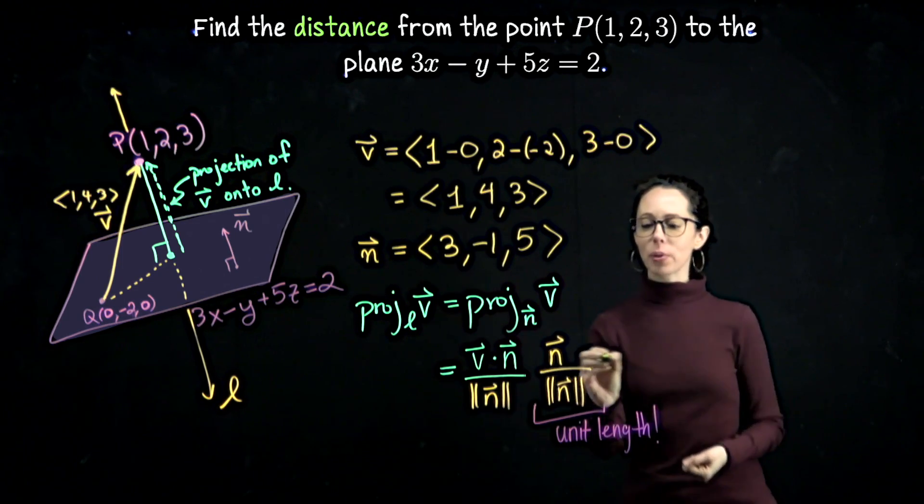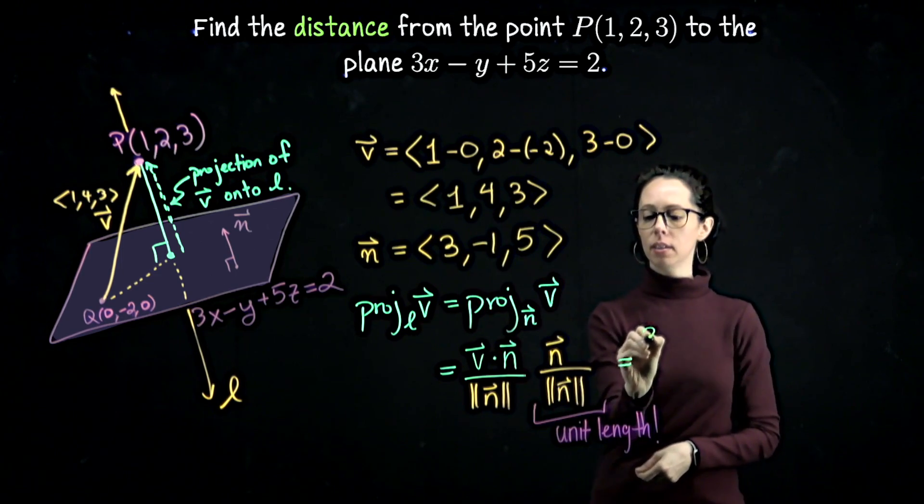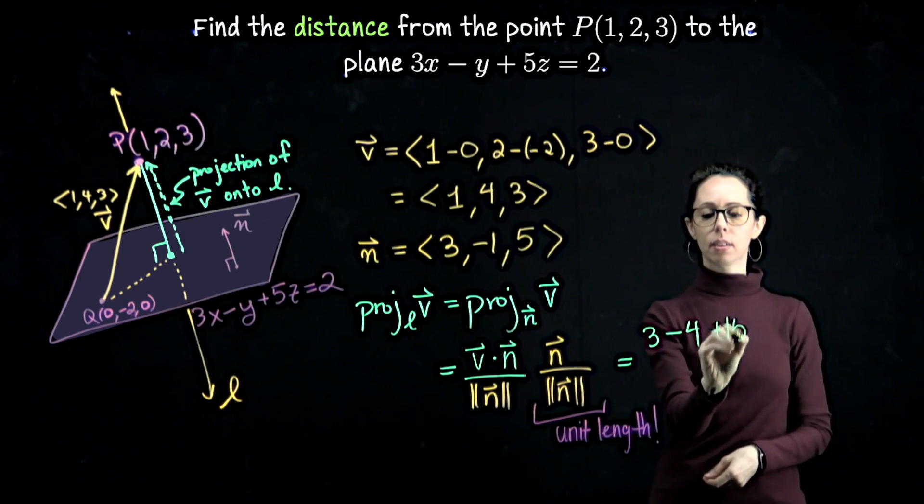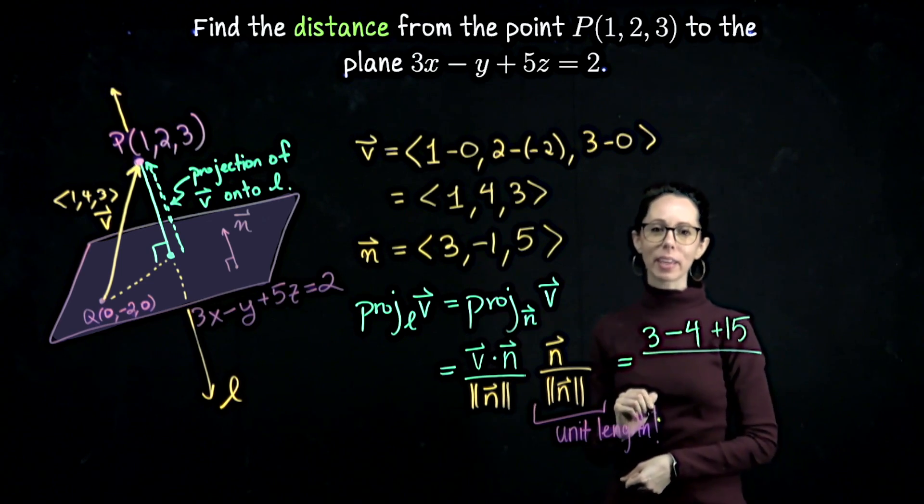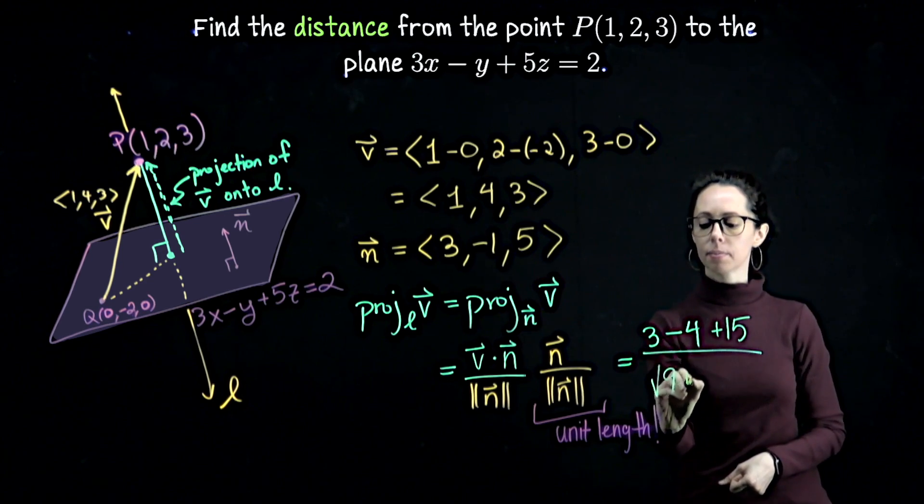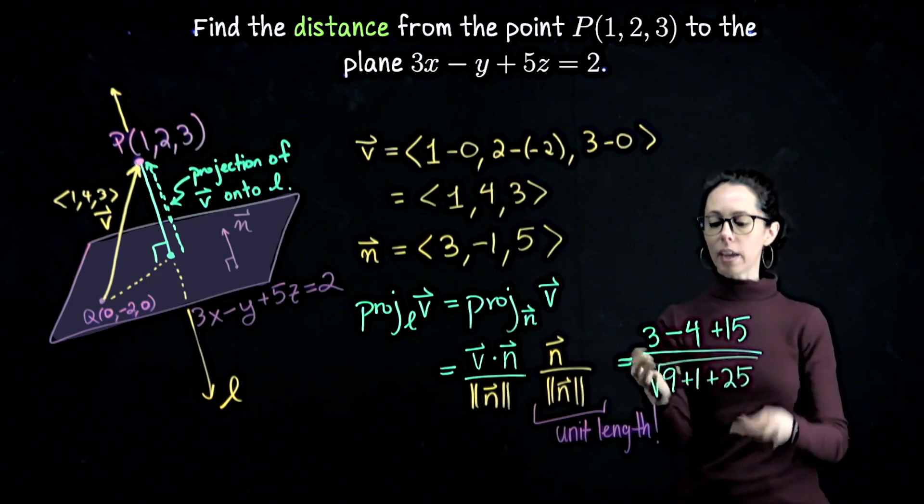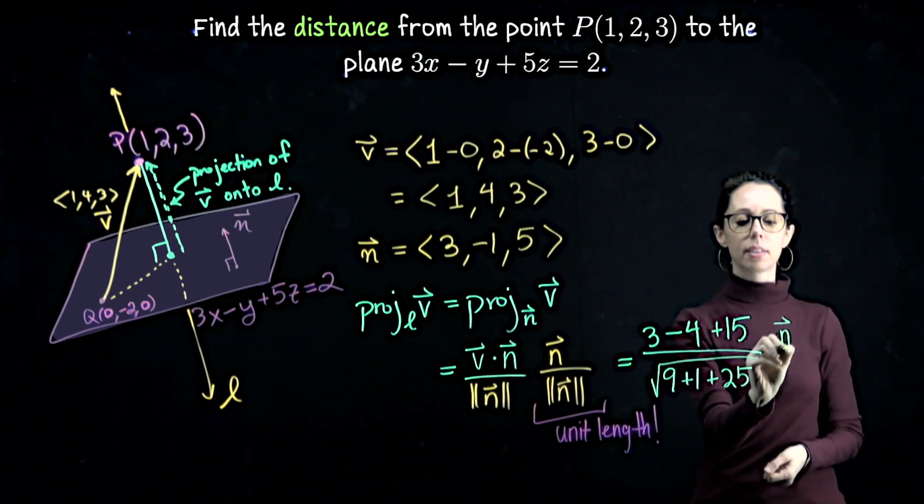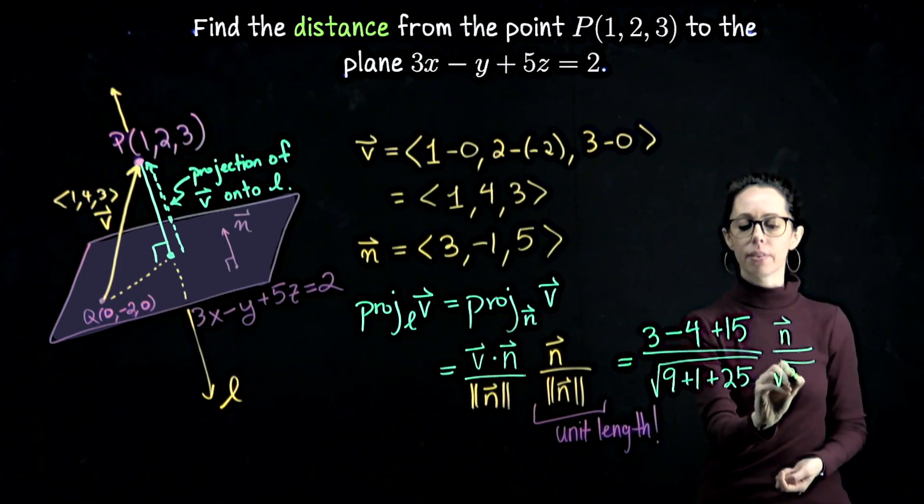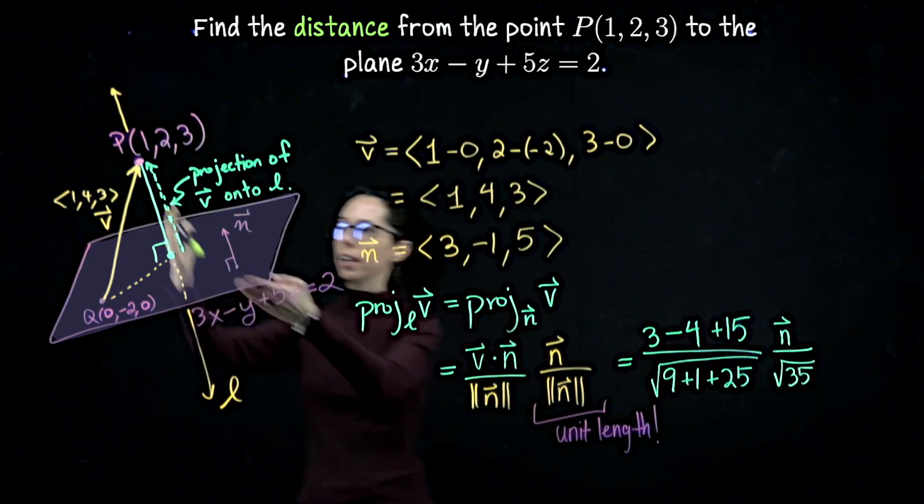In the interest of space, let me keep going to the right. What is the dot product of v and n? It's going to be 3 - 4 + 15. And we're going to divide that by the length of n, which is going to be the square root of 9 + 1 + 25. Okay, this was this coefficient here. So let me write times the vector n divided by its own length, which I can actually go ahead and say is the square root of 35. This is the vector here whose length we need. And then what is that length? It's the size of this leading scalar.